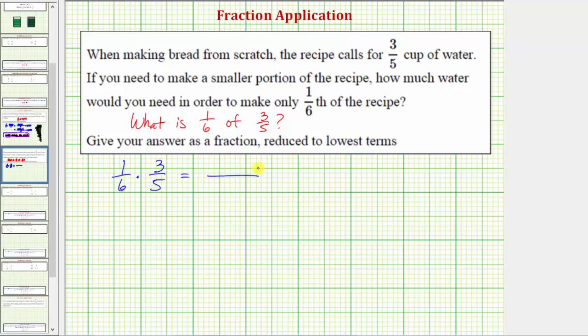To multiply fractions, we multiply the numerators and multiply the denominators. In the numerator we would have one times three, in the denominator we'd have six times five. But before we find these products, it's best to simplify out the common factors other than one between the numerator and denominator.